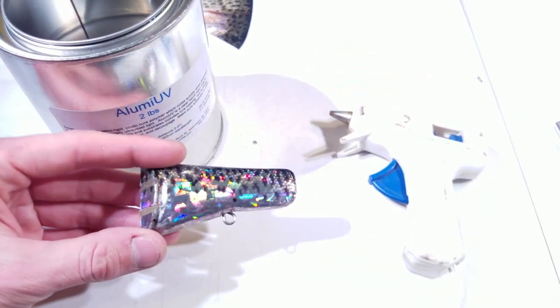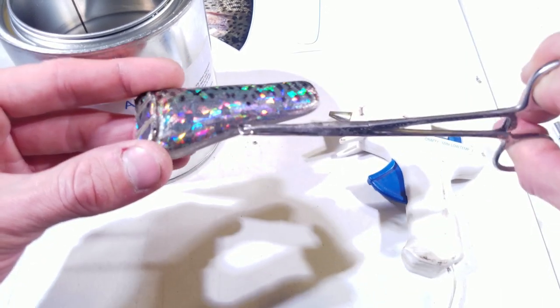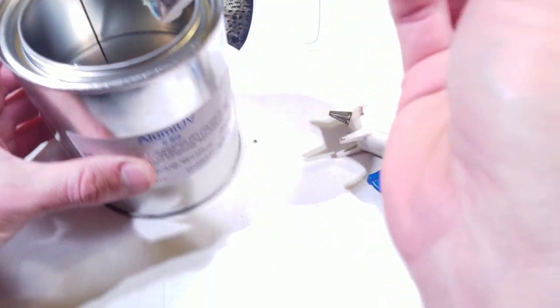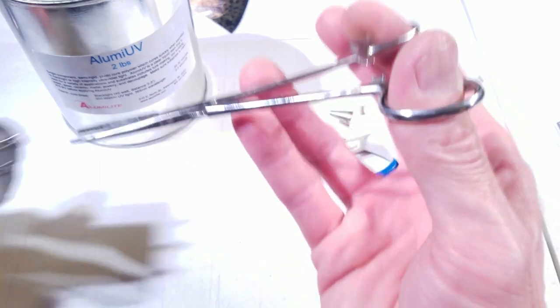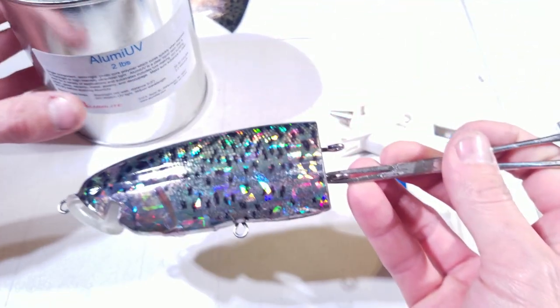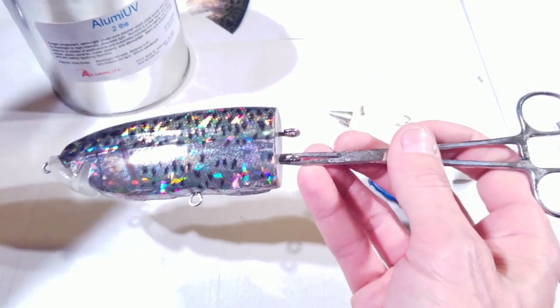The next step is clear coating your baits. I prefer Aluma UV and like to use a forcep to dip it into the can, dripping it back in, and then curing it under some UV lights or sunlight. Same thing with the front piece. Dip it in and cure it under UV lights or sunlight.